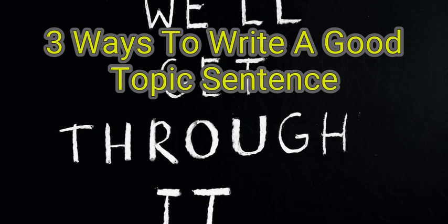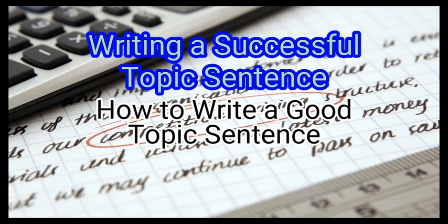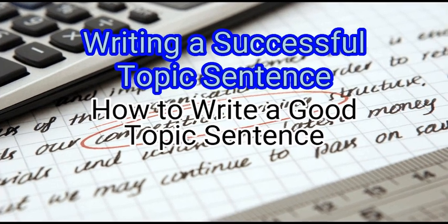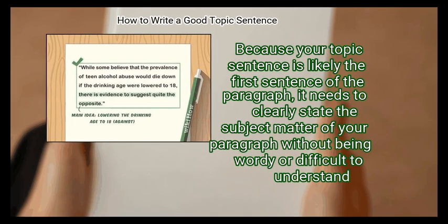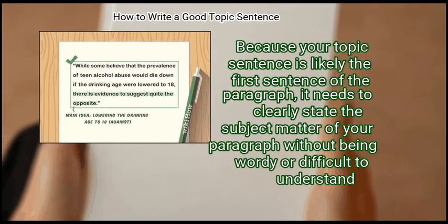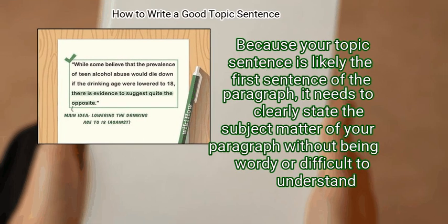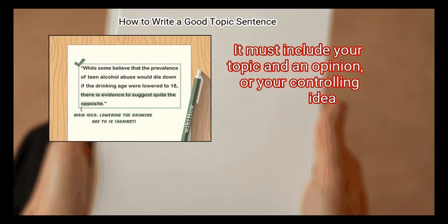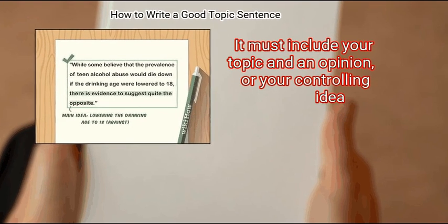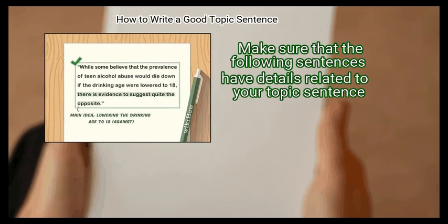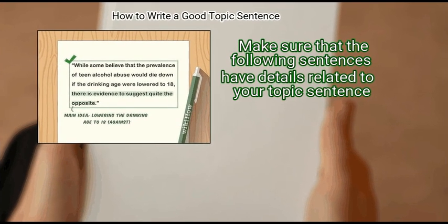Method 1: Writing a successful topic sentence. First, state your main idea clearly. Because your topic sentence is likely the first sentence of the paragraph, it needs to clearly state the subject matter without being wordy or difficult to understand. It must include your topic and an opinion or controlling idea. Make sure that the following sentences have details related to your topic sentence.